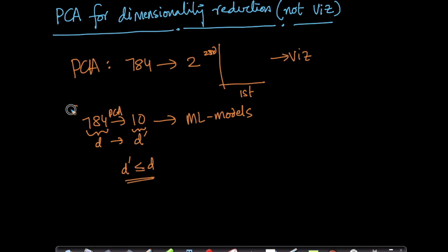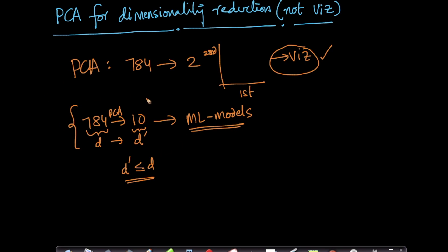We do have situations in machine learning where we want to go from D dimensions to D', but D' is not 2 or 3 — 2 or 3 is mostly for visualization. I'll give you context on where we exactly do this to 10, 20, or 200 dimensions when we learn machine learning models. Since we are learning PCA right now, I'll cover the topic, but the applications we will learn later in this course.